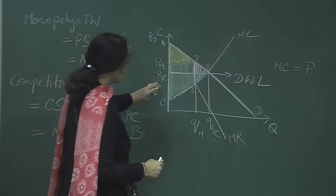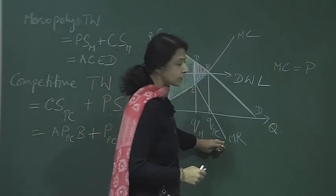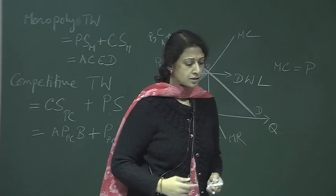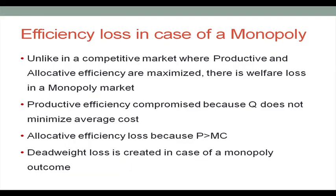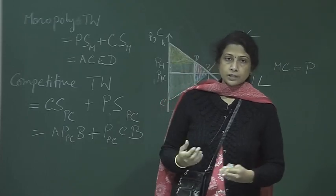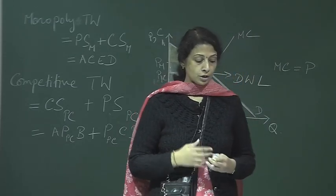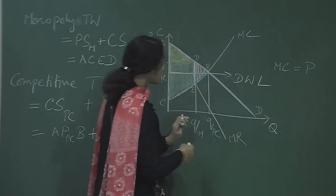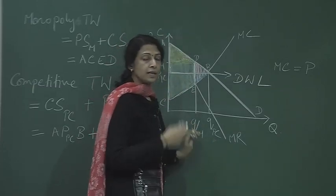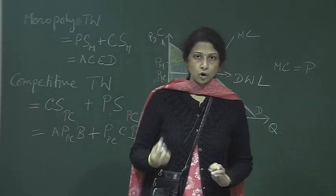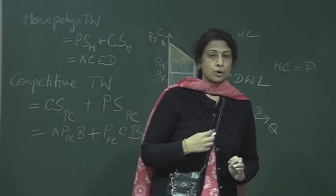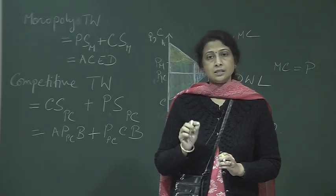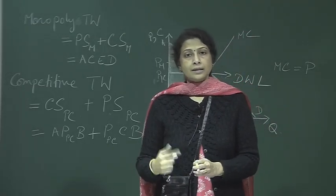So, welfare loss happens when the economy shifts from a perfectly competitive setup to a monopoly setup. Productive efficiency is compromised because the monopolist does not end up producing at the minimum level of its average total cost. Since the monopolist is not operating at minimum cost, it is possible to still reduce cost further and keep on producing.